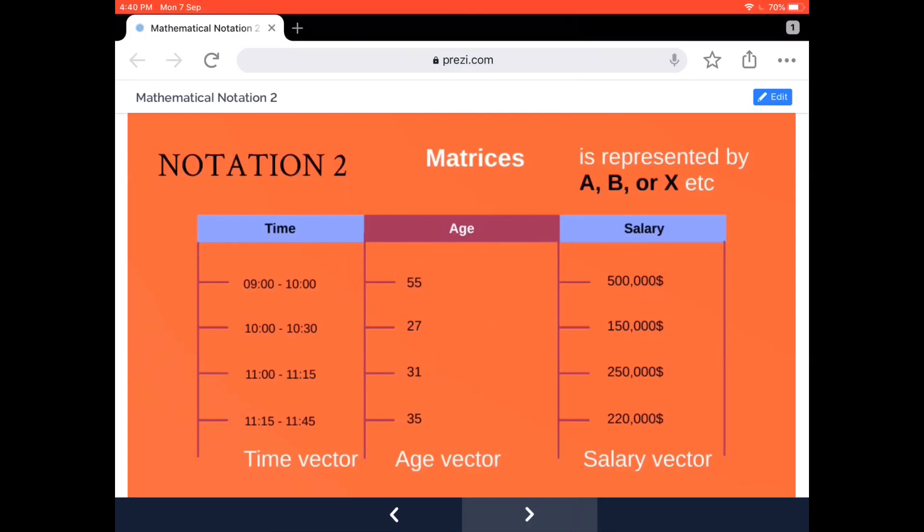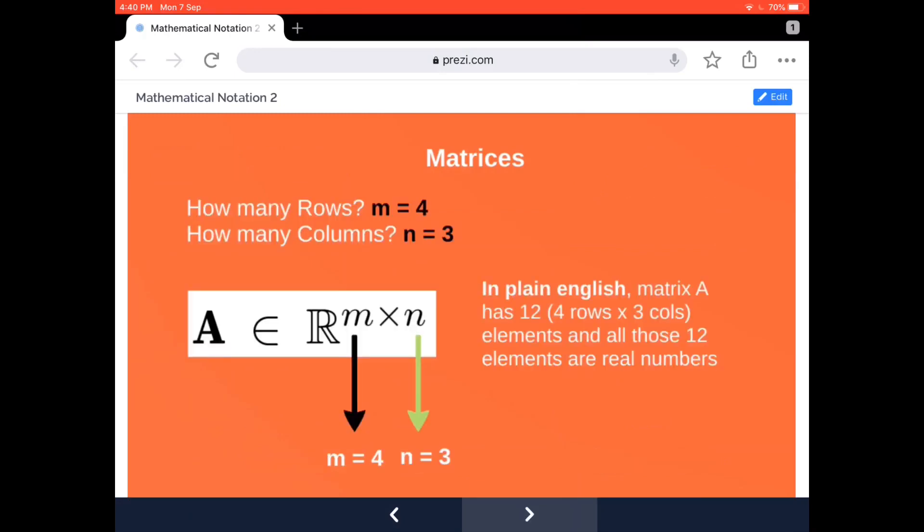Usually this is how a matrix is represented. But here we need to understand this symbol that you will most often see almost everywhere in all research articles. Data science articles show A ∈ ℝᵐˣⁿ. This representation means that all the elements in matrix A—in this case, how many rows do we have? We have